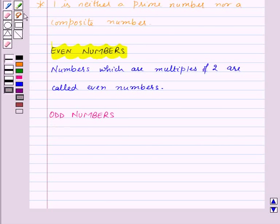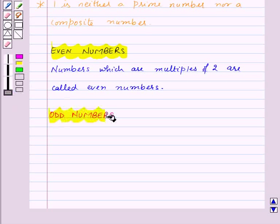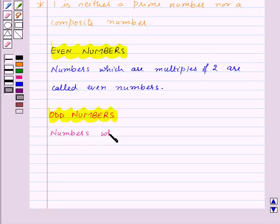Next, let us move on to odd numbers. Numbers which are not multiples of 2 are called odd numbers.